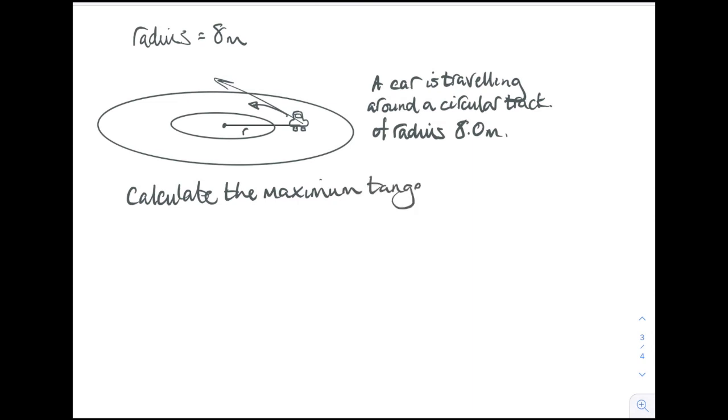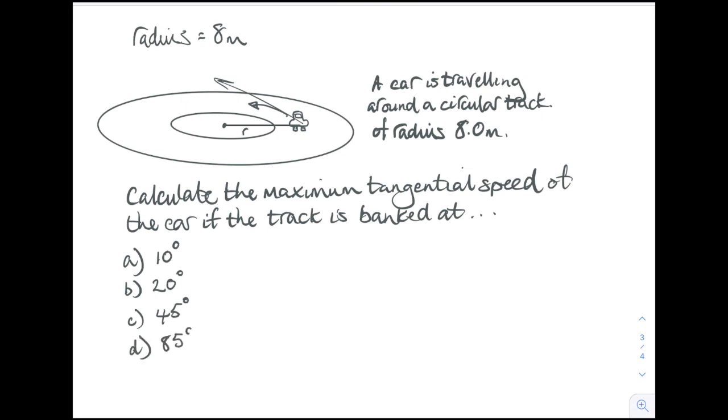We could calculate the maximum tangential speed of the car if the track was banked at, say, 10 degrees, 20, 45, and 85 degrees.